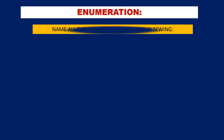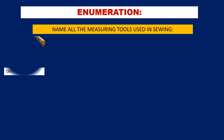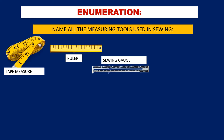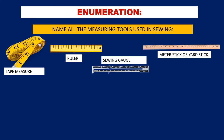Enumeration: Name all the measuring tools used in sewing. The measuring tools used in sewing are: tape measure, ruler, sewing gauge, and meter stick or yard stick.